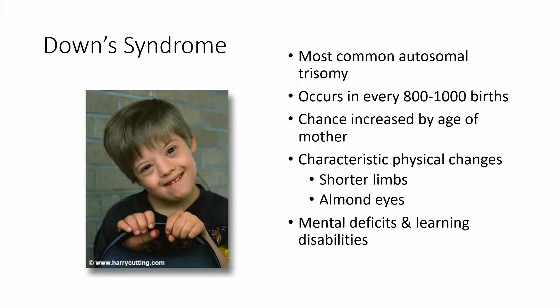Some people with Down syndrome are able to achieve a great deal of independence, depending on severity. It does cause some learning disabilities, which might make independent living more difficult. There are some characteristic physical changes, like almond-shaped eyes. If you look at people with Down syndrome, regardless of race or individual features, you'll see commonalities in their facial features. The chances of having a child with Down syndrome increase with the age of the mother — women in their late 40s have a much higher chance.